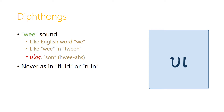The combination upsilon-iota makes the 'ui' sound, like in the English word 'we', or like in the word 'tween', and so the word for 'son' in Greek is pronounced 'huios'. Notice there's a rough breathing mark over the iota, and so it starts with an 'h' sound, but the upsilon-iota themselves make the sound 'hui' — 'huios'. Upsilon-iota never make the sound like in 'fluid' or 'ruin'; it always makes the 'hui' sound.